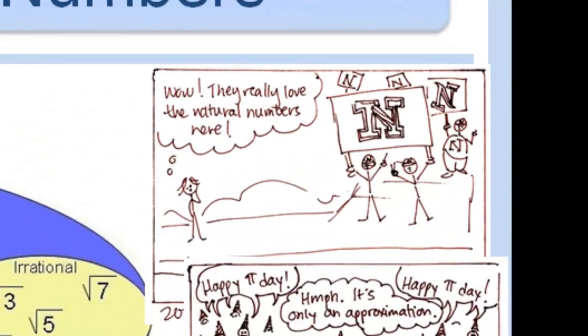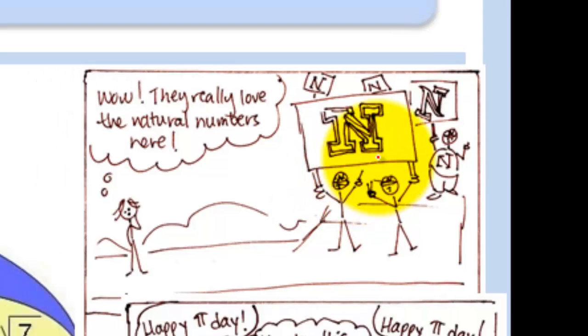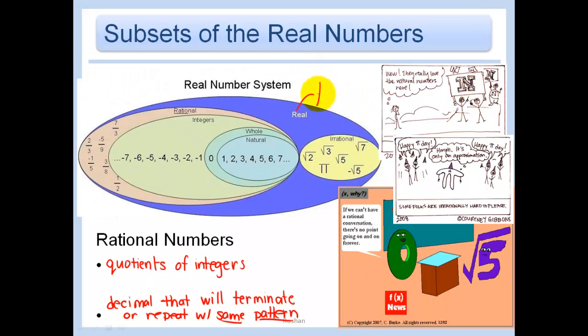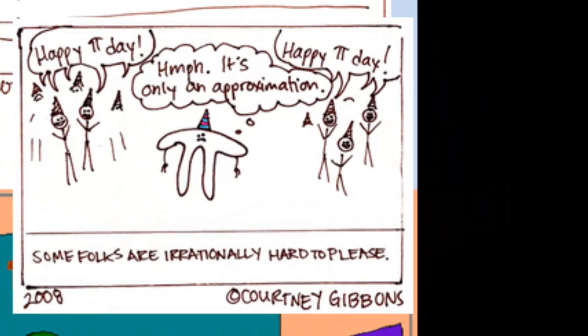Let's look at some of these comics here. This first one, wow, they really love the natural numbers. That sign that he's holding up, that's just a symbol for the natural numbers. Another one that you should be familiar with is the real numbers, which we write like that. And then just some little comics on irrational numbers. What's this first one? Happy Pi Day. Hmm, it's only an approximation. Some folks are irrationally hard to please. Pi is irrational, so he's irrationally hard to please.